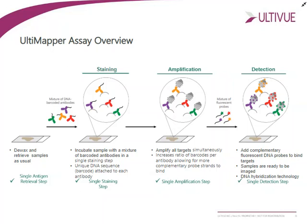Once you've performed the single antigen retrieval step, single staining step, and single amplification step, you can come in with fluorescently labeled probes that have sequences complementary to the barcodes. This relies on DNA hybridization — a very gentle technology — which allows you to bind the probes to the extended and elongated barcodes and thus detect all four signals plus a nuclear counterstain at the same time. An assay taking just over five hours allows you to perform your multiplex immunofluorescence step and start scanning your slides, getting results in a single day.